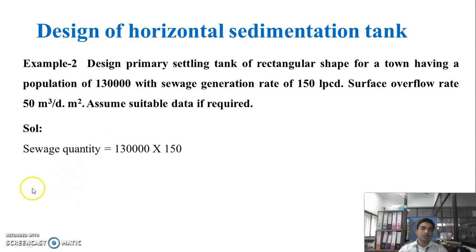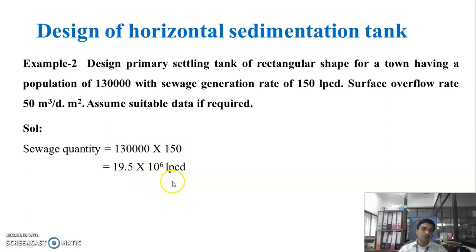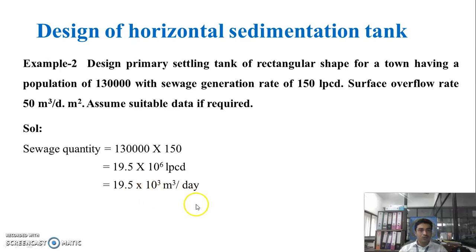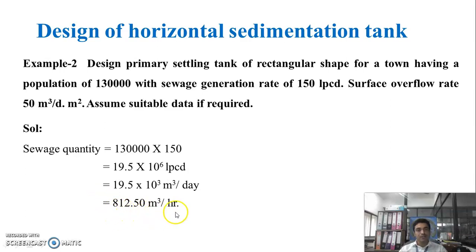First, calculate the sewage quantity: population × sewage generation rate = 1,30,000 × 150 = 19.5 × 10⁶ liters per day, which is 19.5 × 10³ meter cube per day, or 812.50 meter cube per hour.